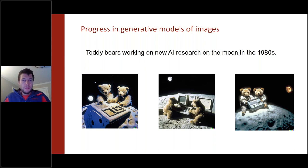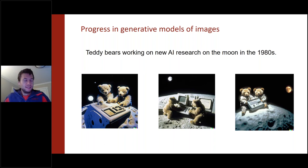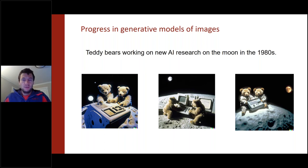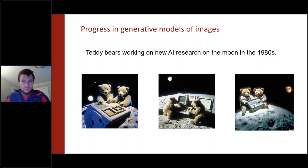Text-to-image models have become extremely powerful over the last few months. There have been a number of systems developed in industry that you might have heard about, like DALL-E 2, Imagen, and Stable Diffusion. They are all based on a core technology called diffusion or score-based generative models, which is what we're going to talk about today.